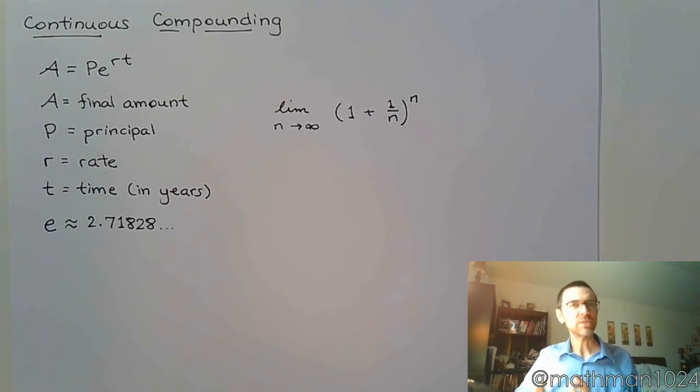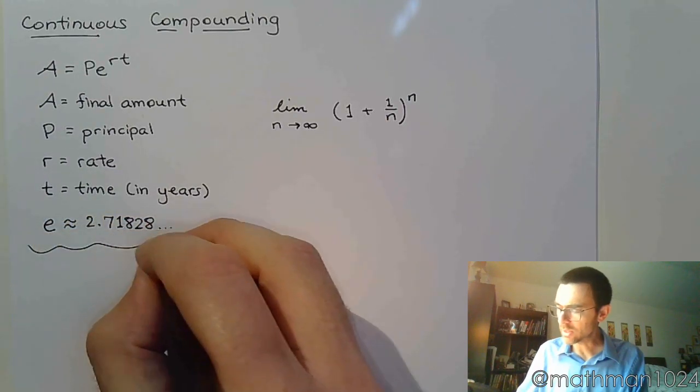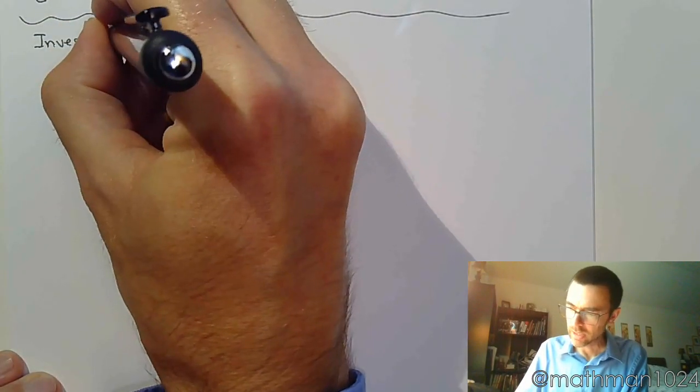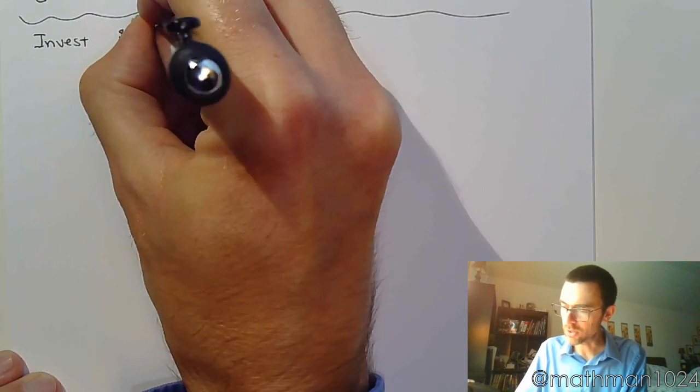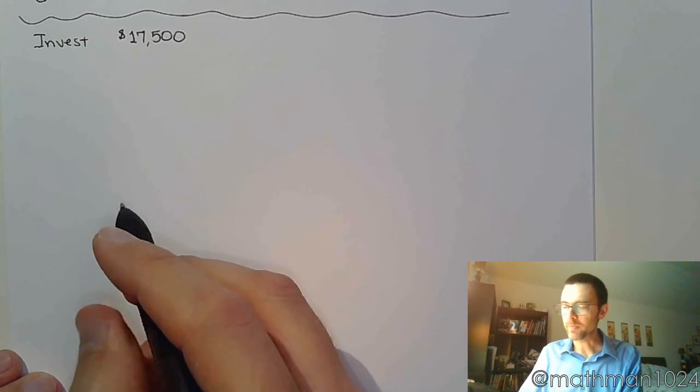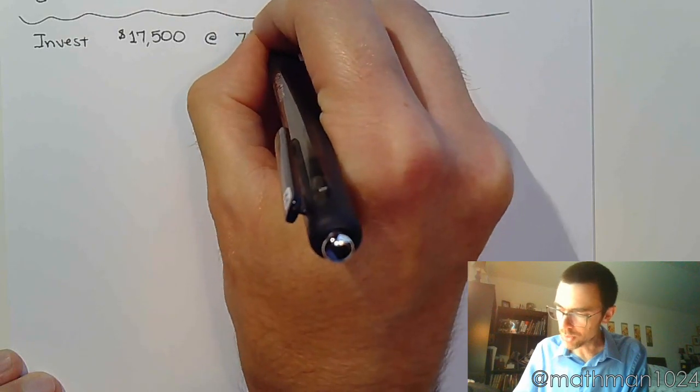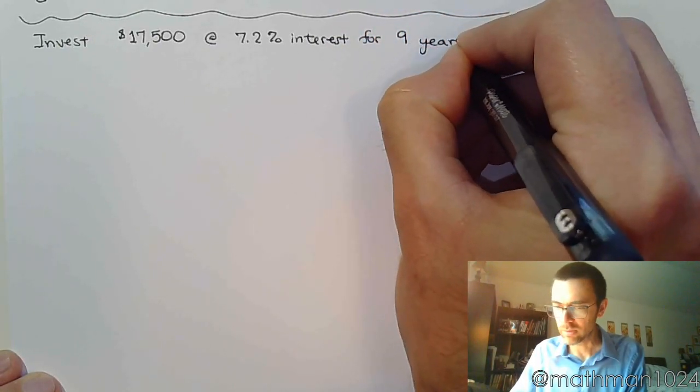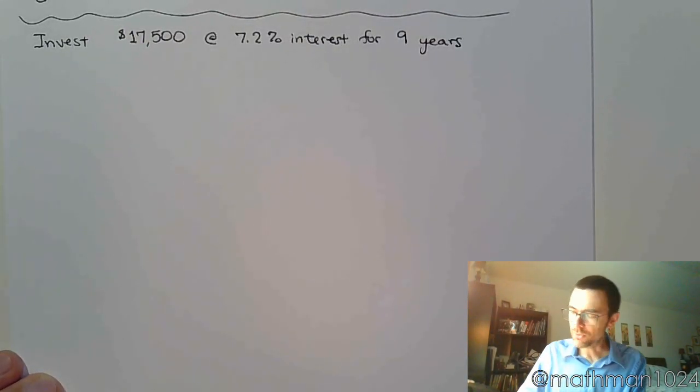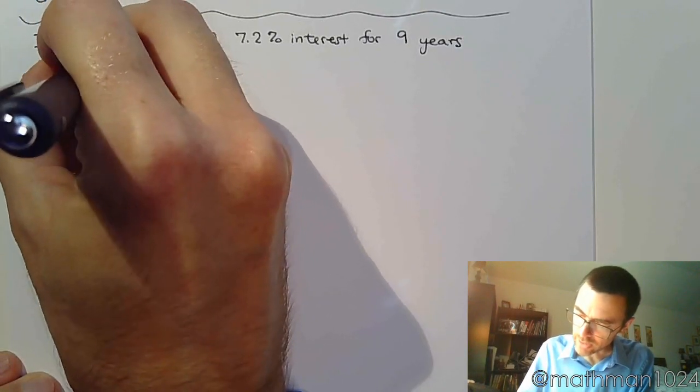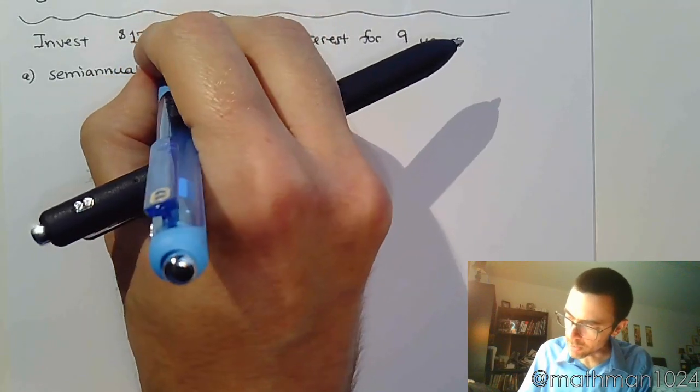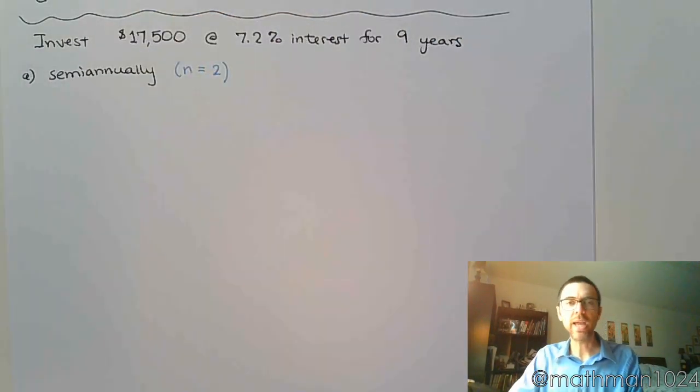So let's do a few examples so we can see the difference in the two different formulas between compound interest and continuous compounding. We're going to invest $17,500 at 7.2% interest for nine years. We're going to do it two different ways. The first way is we want to compound this semi-annually. Semi-annually means that you have an n value of 2, twice a year.